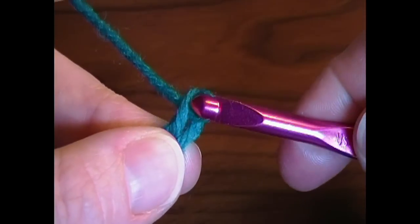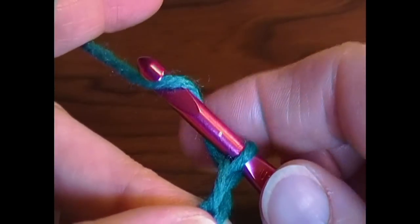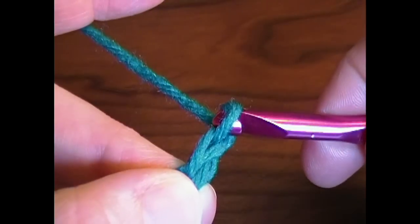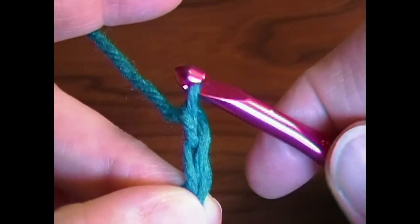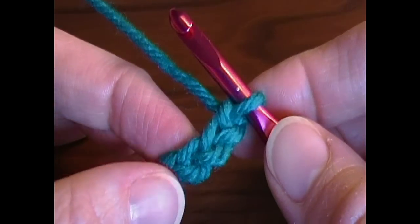Now do it again. Three. Yarn over, catch the yarn, twist your hook downward, pull it through. There you have four chains.